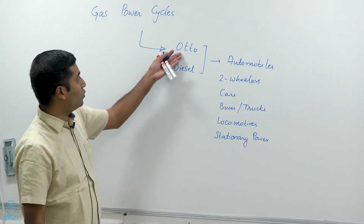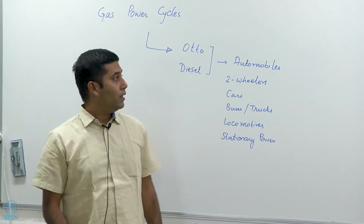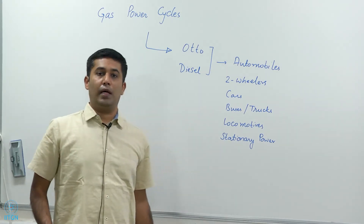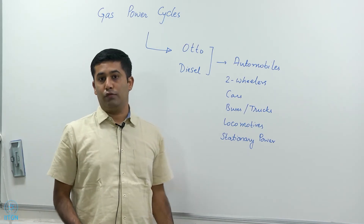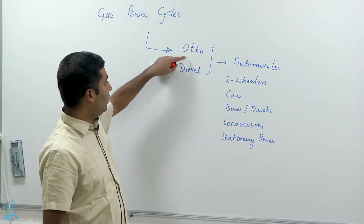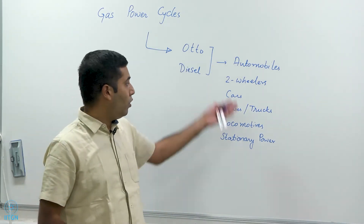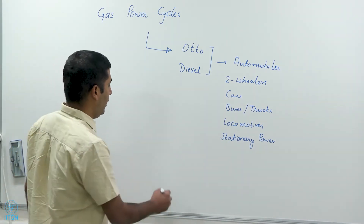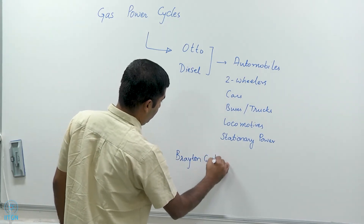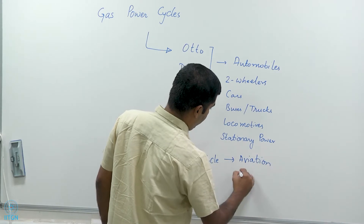The Otto cycle uses petrol or gasoline, and the diesel cycle uses diesel, though the Otto cycle could also use compressed natural gas or LPG, and diesel engines could also use blended ethanol or blended biodiesel. These are used in reciprocating internal combustion engines. We also have the Brayton cycle, which we will be discussing in detail, and this is used in aviation and in stationary power production.